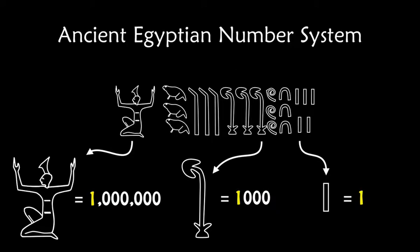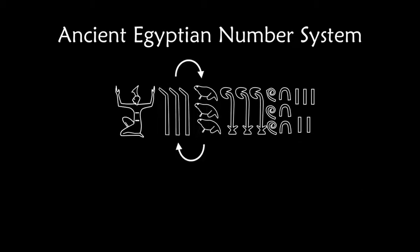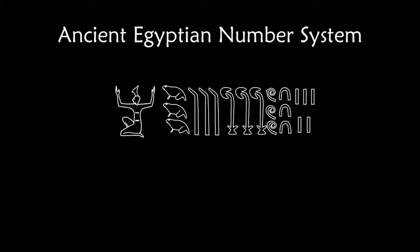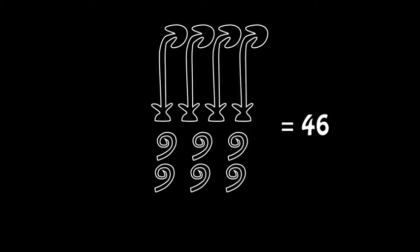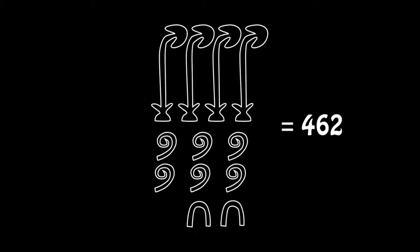If an ancient Egyptian student made an error by forgetting the order of tadpoles and bent fingers, no problem — it could be corrected because the order of symbols does not change their value. They are commutative. In fact, ancient Egyptians sometimes just squeezed their numbers into boxes. This is a box from the temple of Karnak. So here we have 4,622.